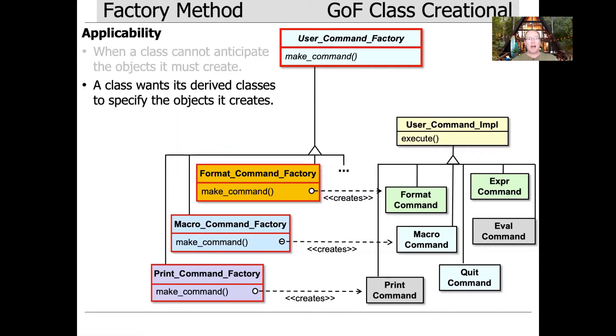You should also apply this pattern when a class wants its derived classes to specify the object it creates. In this particular case, you can see we have lots of different types of subclasses of user command factory - format command factory, macro command factory, and print command factory - and they all make the corresponding products, the different kinds of subclasses of user command impl.